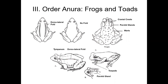Anurans have very well-developed tympana — the tympanum is the external ear. Some species like tree frogs have really well-developed toe pads that create suction so they can adhere to vertical structures like trees and limbs. Some species also have cranial crests, which are actually important species identifiers for some of our toads.